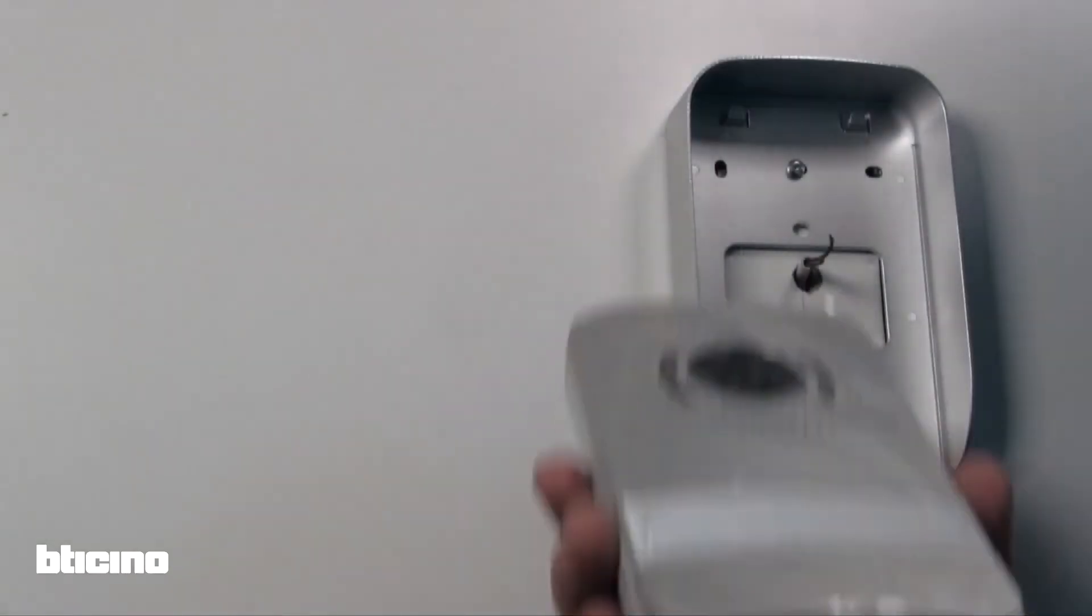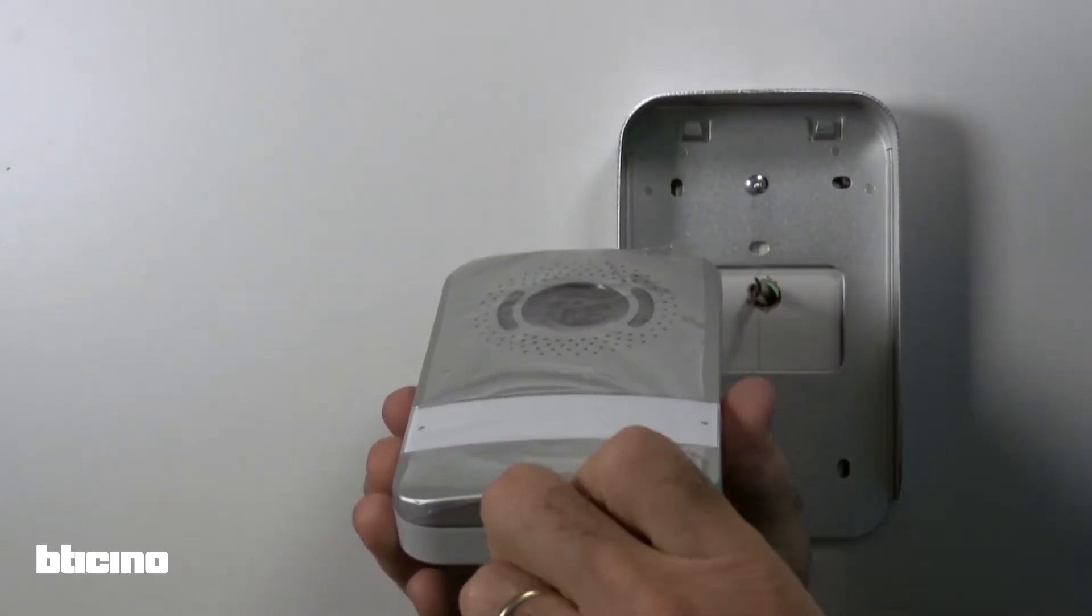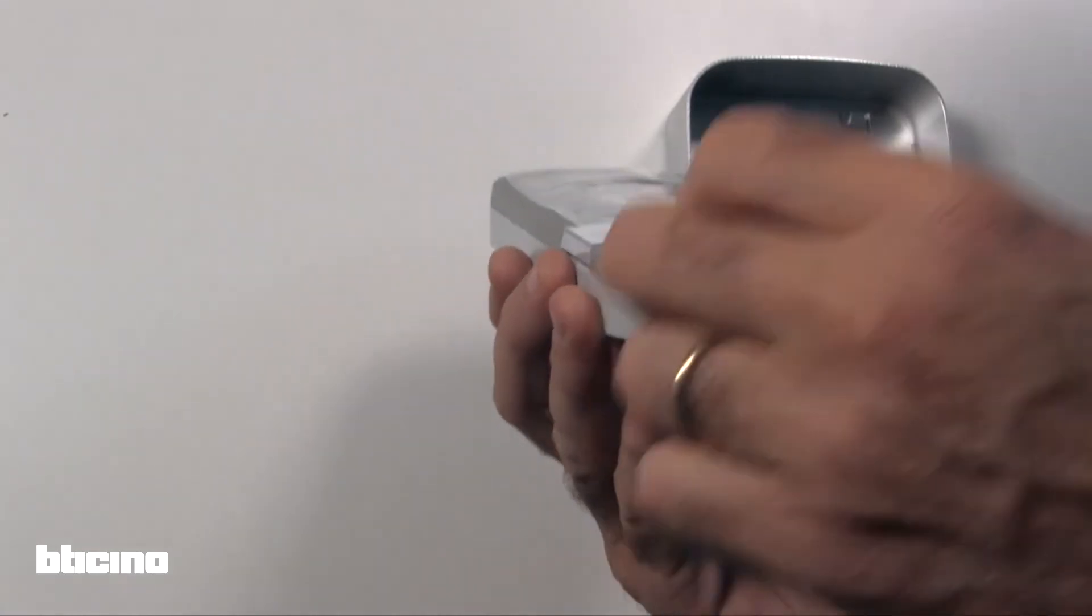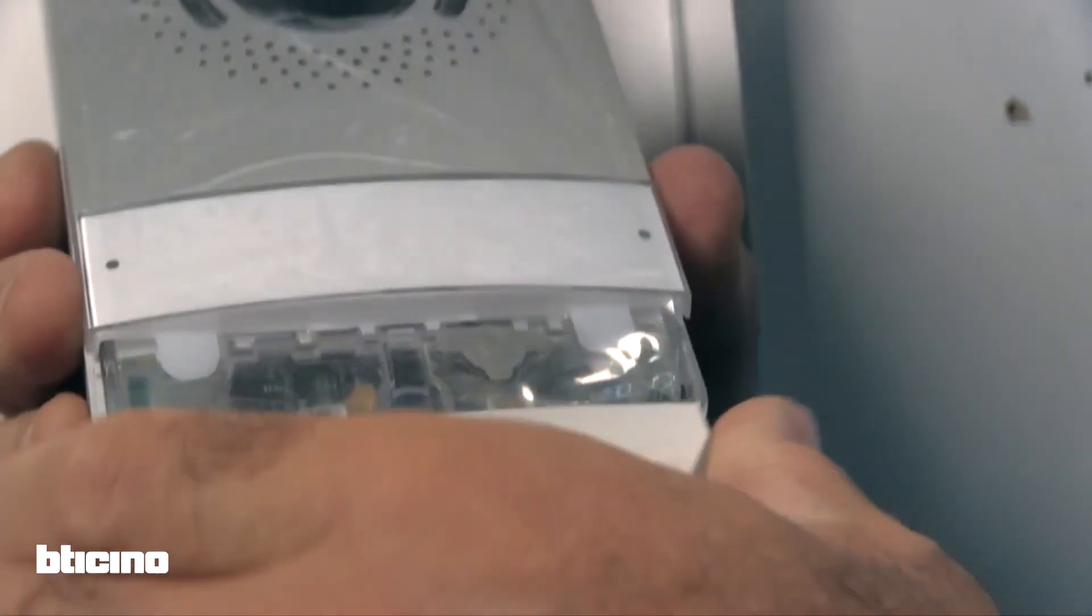Next, open the external module, unscrewing the two Torx screws with the included key. Remove the lower cover to access fixing screws to mount the unit.